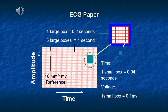The standard calibration of the ECG paper: voltage is at 10 mm per millivolt and time is 25 mm per second. Each small box, which is 1 mm, equals 0.1 millivolt for voltage, and for time each small box equals 0.04 seconds.